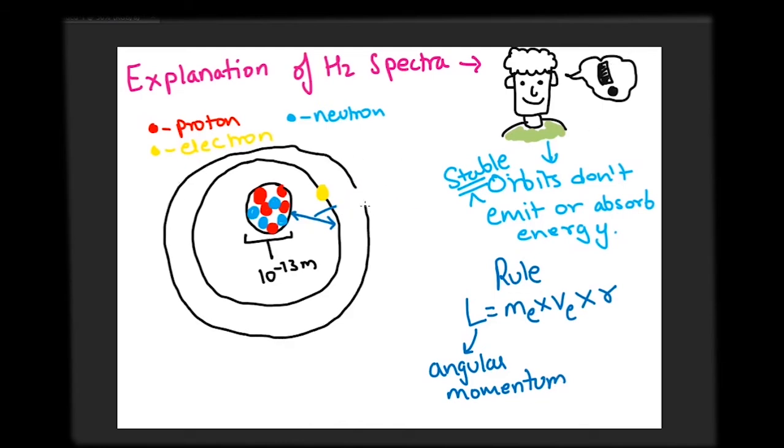Quantization means that a particular variable, in our case the angular momentum, can only have special discrete values.